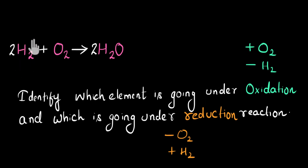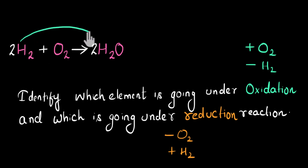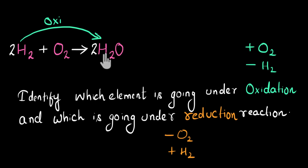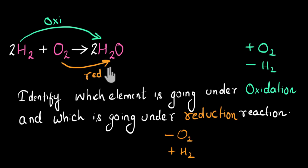Hydrogen was alone at first, but after the reaction hydrogen is combined with oxygen — meaning oxygen got added to hydrogen, so hydrogen is going under oxidation. Oxygen was alone to begin with, but after the reaction it's combined with hydrogen — meaning hydrogen got added to oxygen, so oxygen is going under reduction. Since both oxidation and reduction are happening in this reaction, this is an example of a redox reaction.